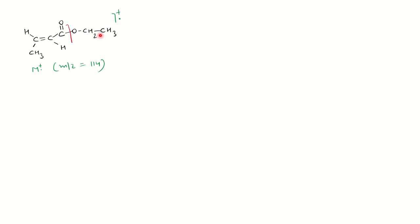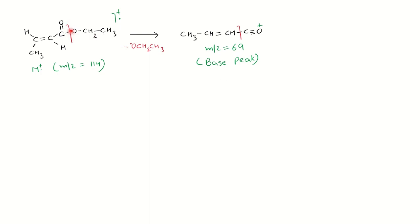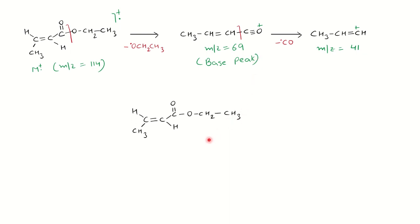Further fragmentation: 99 minus 30 (loss of –OCH2CH3... actually loss of OC2H5 fragment) gives a base peak at 69, which is the most stable carbocation due to conjugation — consistent with alpha cleavage at the carbonyl. Then loss of CO (28) from 69 gives 41. All mass fragmentation peaks are justified by this structure. The possible structure for the organic compound is ethyl trans-crotonate (ethyl (E)-but-2-enoate). All the best for your studies — see you in the next video!